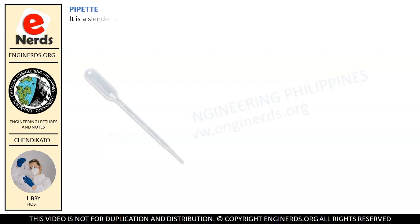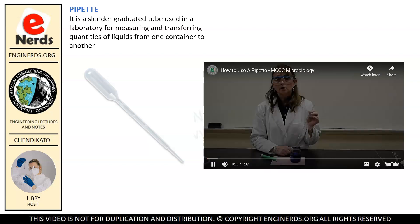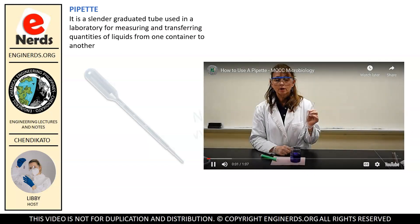Next in our list is the pipette. It is a slender graduated tube used in a laboratory for measuring and transferring quantities of liquids from one container to another. If it is not clear to you what a pipette does, have a look at this video demonstration.